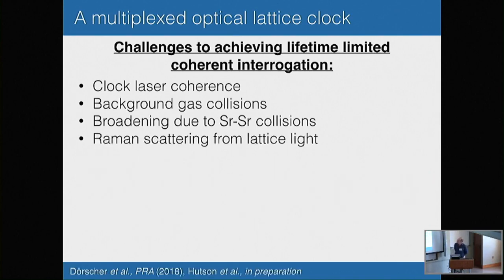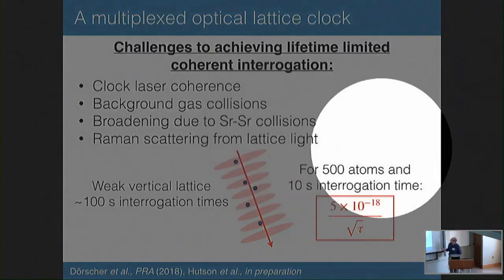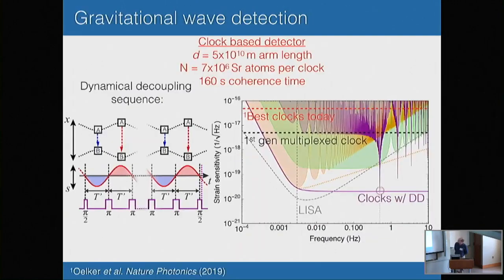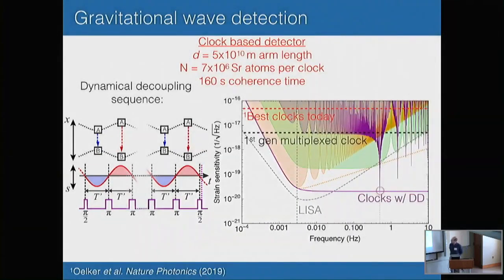What is likely to limit us — and this is turning up in optical lattice clocks around the world — is Raman scattering from the lattice laser: scattering out of the excited clock state of strontium due to two-photon transitions. But looking at the numbers, using weak vertical lattices we can achieve in principle 100-second interrogation times and lifetimes. Being somewhat conservative, with only 500 atoms and 10-second interrogation times, you can achieve a stability that's about an order of magnitude better than what people are currently operating at. Plotted on the sensitivity curve, that's a pretty big step in the direction of ultimately reaching these higher levels of stability.